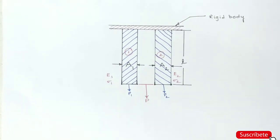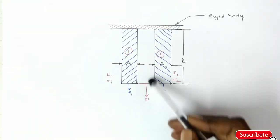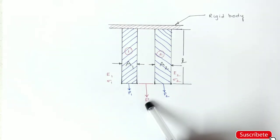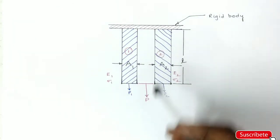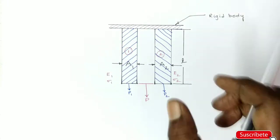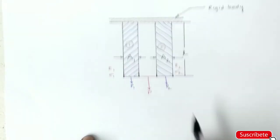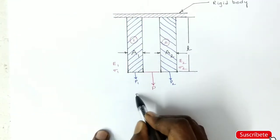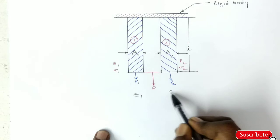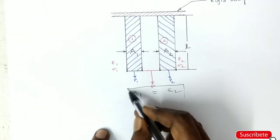So two important points: deformation is equal, so that means strain is equal. Strain epsilon 1 equals epsilon 2, equal to each other.